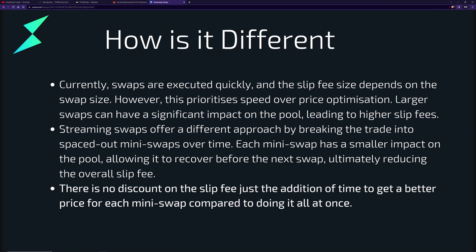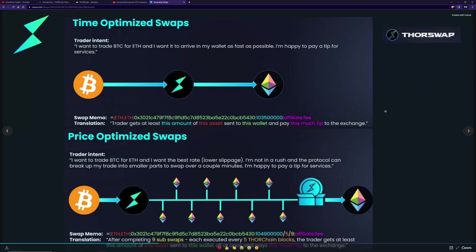Streaming swaps offer a different approach by breaking up the trade into smaller mini swaps or sub-swaps over a period of time. Each mini swap has a small impact on the pool, allowing it to recover before the next swap, ultimately reducing the overall slip fee. I want to stress there's no discount on the slip fee formula — it's just adding a time dimension to get a better price for each mini swap compared to doing the swap all at once. This picture from THORSwap shows the concept.